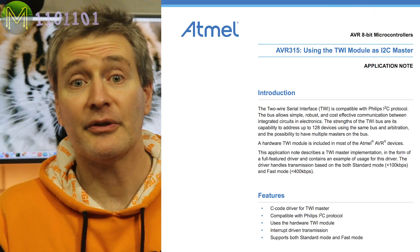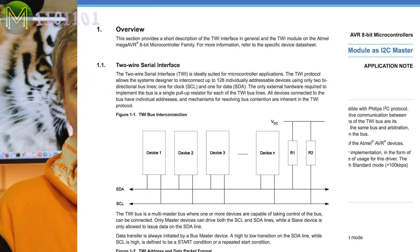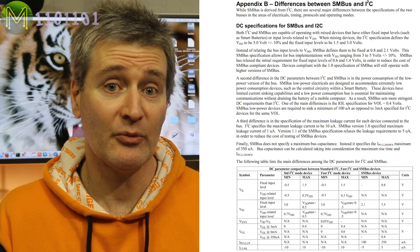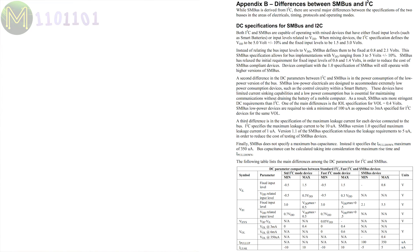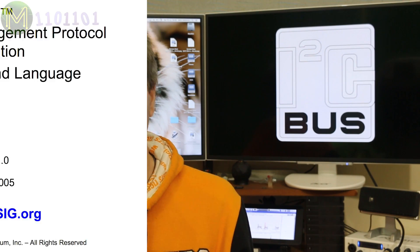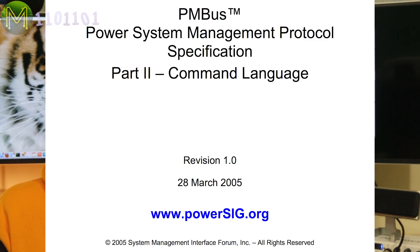There are other variants to I2C. TWI, which was a standard created by Atmel and other companies to avoid trademark conflicts. This standard is identical to I2C, but lacks a high-speed mode. There's also SMBUS, which is a derivative of I2C developed by Intel which includes several differences. There's also PMBUS, which is a derivative of SMBUS that adds power management capabilities.